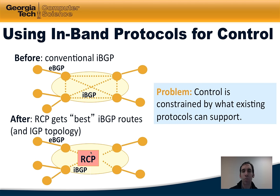Ultimately the architecture still proved useful, and a version of the RCP is currently running in at least one large backbone network today to do things like automated traffic redirection for security incidents or traffic scrubbing. Nevertheless, the range of applications that something like the RCP can support is still relatively limited in comparison to what might be possible with a general separate control plane.